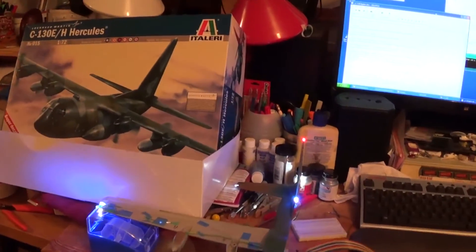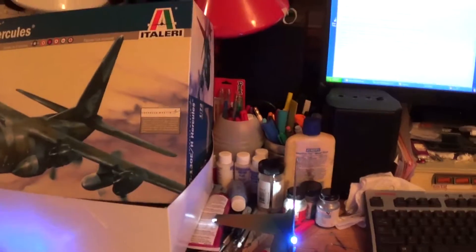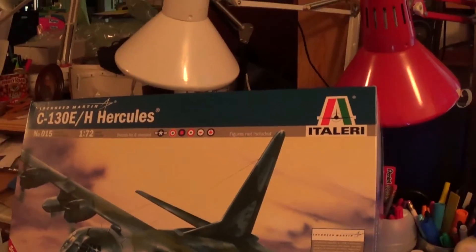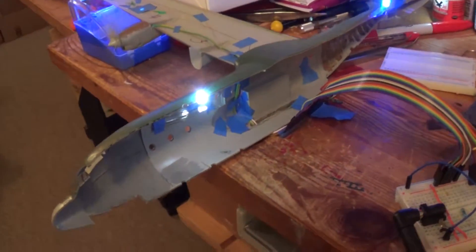Well, here we are. This is the motorized and lit up version of the Italiari C-130. I've got lights here and there. This will show you how the build process.